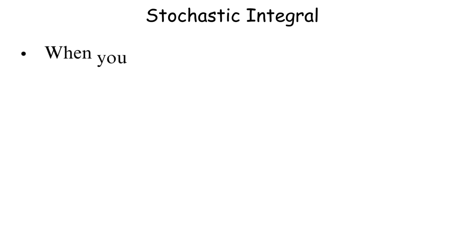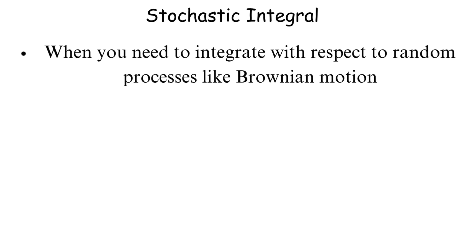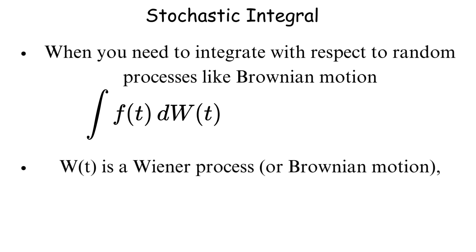Stochastic integral. This is used when you need to integrate with respect to random processes, like Brownian motion, instead of regular variables. So you get the integral of f dW, where W of t is a Wiener process, which is basically mathematical white noise. But here's the problem.